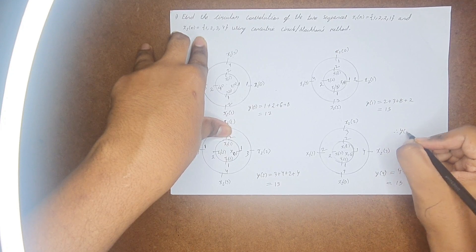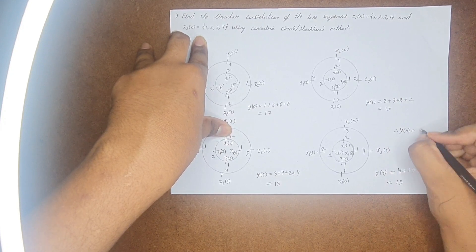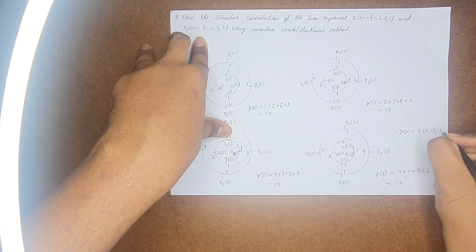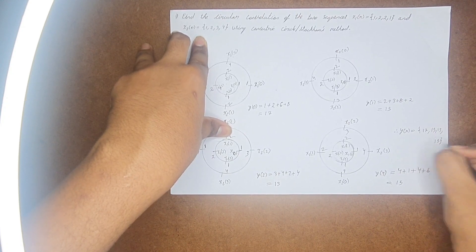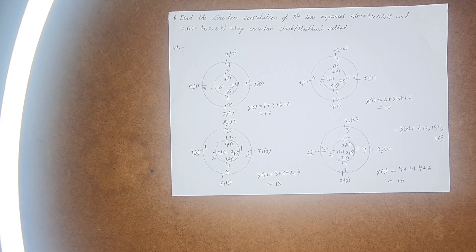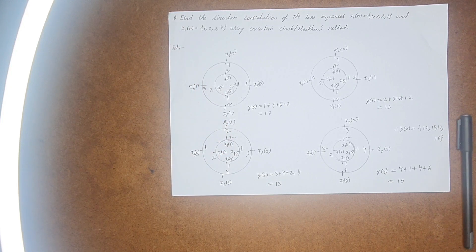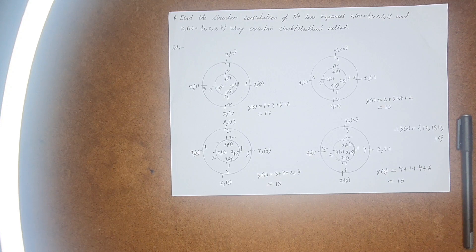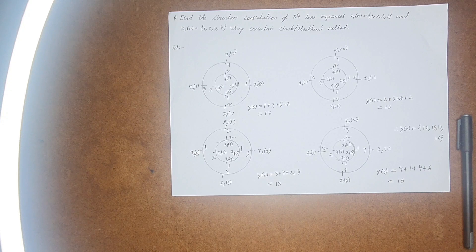So, finally, my y(n), that is the output will become 17, 15, 13 and another 15. This is the value. This is how you are going to do the circular convolution of two signals using the concentric circular method.